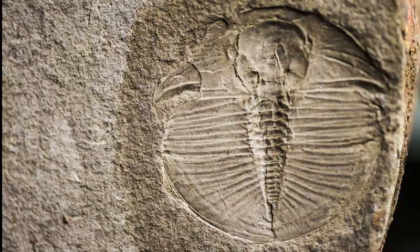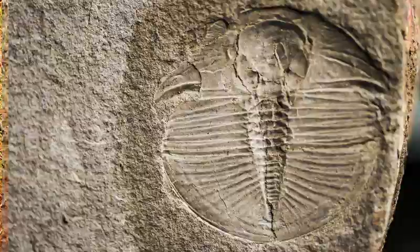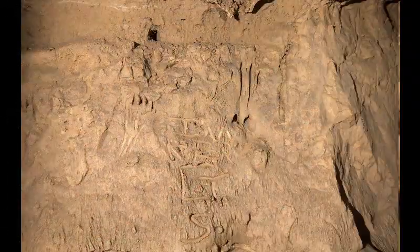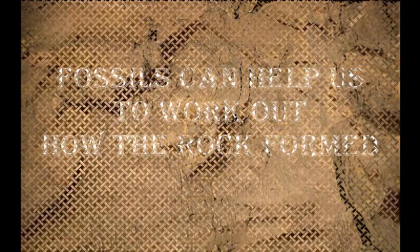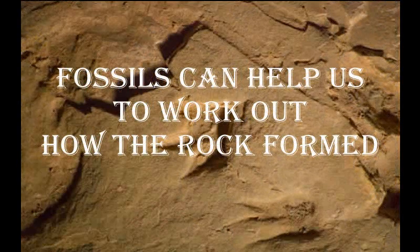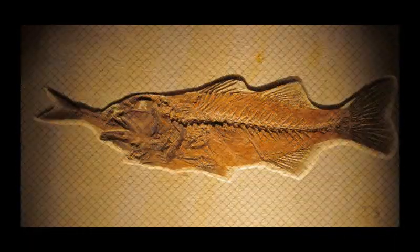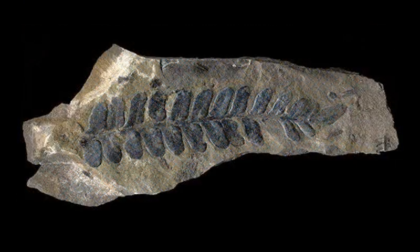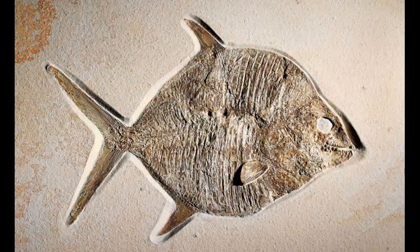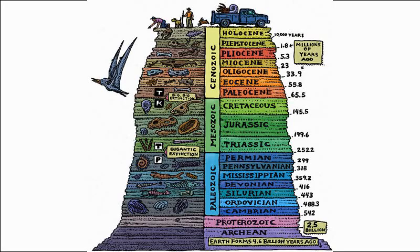The remains of the fossils may be in the form of an imprint left by an animal in mud, like a scratch. The mud will turn into rock over time when more sediment is deposited on top of the imprint. Fossils can help us work out how a rock formed — for example, limestone contains fossils from sea animals and plants, showing clearly that limestone was formed under the sea.